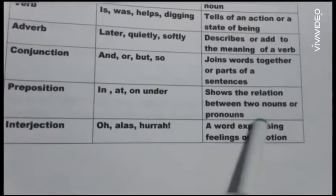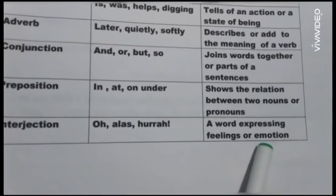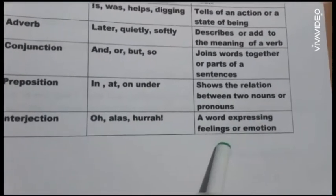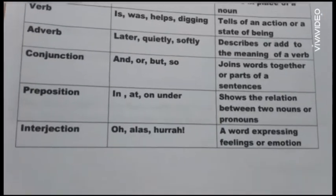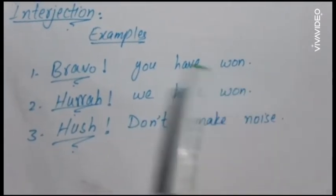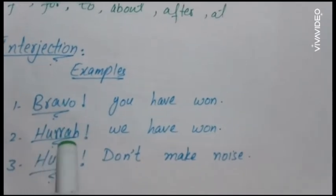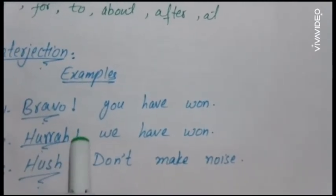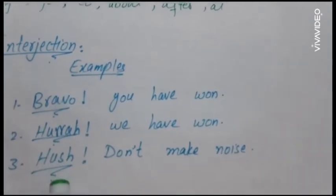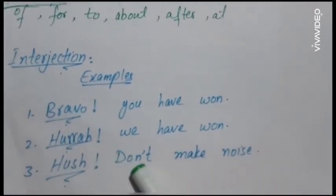Interjection. Interjection is a word expressing feeling or emotion. Interjection — these are phrases used for expressing feeling or emotion. For example: O, hurra. You can see that 'bravo' and 'hurra' are interjections. Also: shhh, don't make noise — this is showing the interjection.